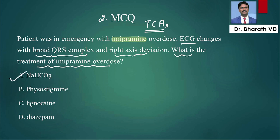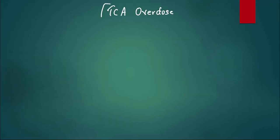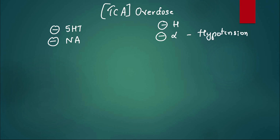Physostigmine is the antidote for atropine overdose. Lignocaine is a local anesthetic and diazepam is a benzodiazepine. Now why is sodium bicarbonate used? Tricyclic antidepressants inhibit reuptake, so they increase the levels of norepinephrine and serotonin. But they also block histamine causing sedation, they block alpha leading to hypotension, and they block muscarinic receptors causing atropine-like action like dry mouth, blurring of vision, constipation, urine retention. But in the heart, it will lead to tachycardia, and that tachycardia can go for QT prolongation and arrhythmias can happen.